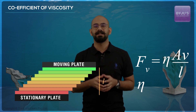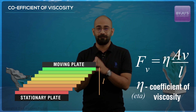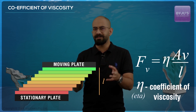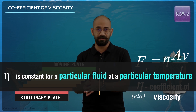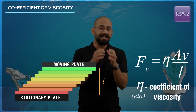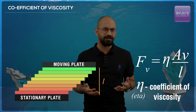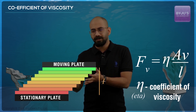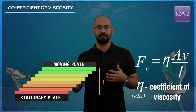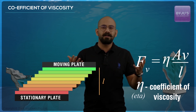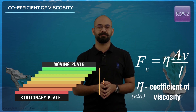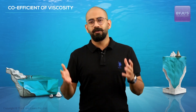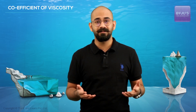This η is called the coefficient of viscosity. It is a constant for a particular fluid at a particular temperature. This basically means that the higher the coefficient, the greater the viscous force, keeping all other parameters the same. So a thicker fluid will have a greater coefficient of viscosity. For example, fluids like honey and glycerin have very high coefficients of viscosity.